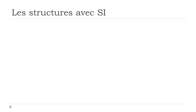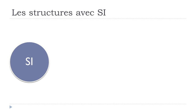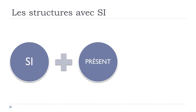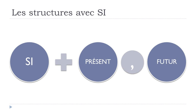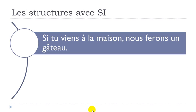If we want to express this POSSIBILITÉ, the first option is SI constructed with the PRESENT, followed by LE FUTUR. For example: SI TU VIENS À LA MAISON — VENIR is 'to come,' À LA MAISON is 'at home' — NOUS FERONS UN GÂTEAU. That's the future form of FAIRE. So: 'If you come home, we will make a cake.'